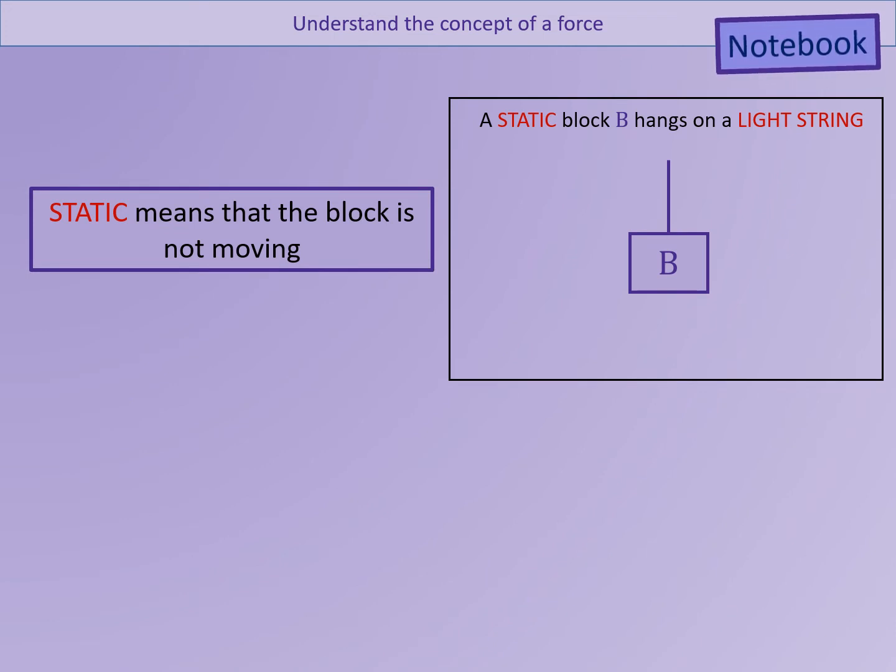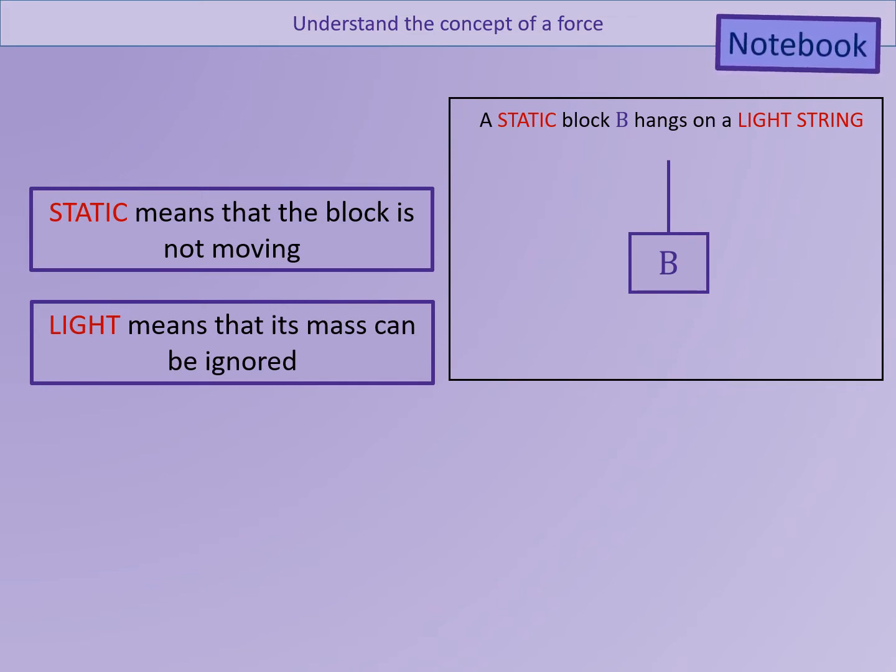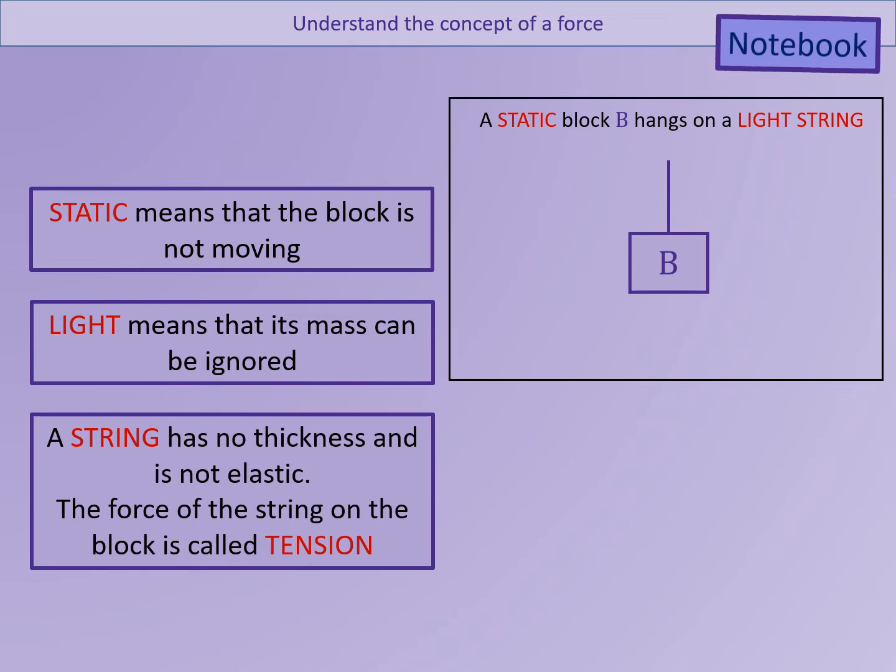We are now going to consider object B. Object B is a static block hanging on a light string. The word static means that the block is not moving. Light means that we can ignore the mass because it is negligible. It doesn't have a significant effect on the overall forces. A string is considered to have no thickness. It's also considered to be inelastic, which means it doesn't stretch. The force in the string is called tension, and the tension is what is holding the block.